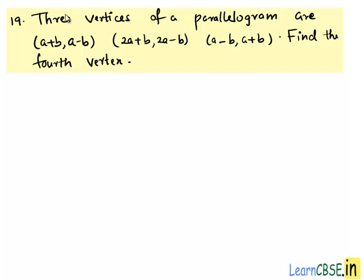Chapter number 14, exercise 14.3, 19th question. Three vertices of a parallelogram are (a+b, a-b), (2a+b, 2a-b), and (a-b, a+b). Find the fourth vertex.